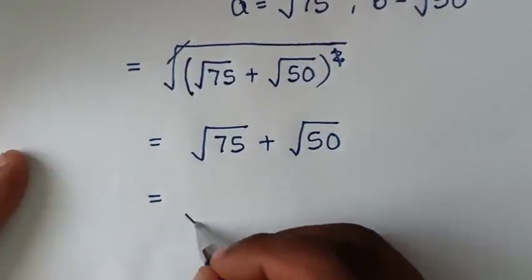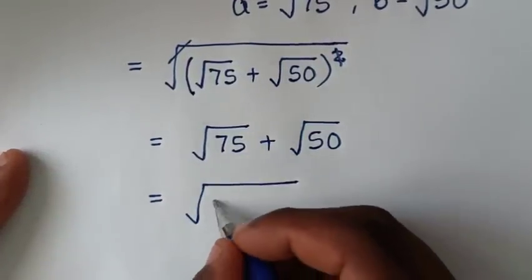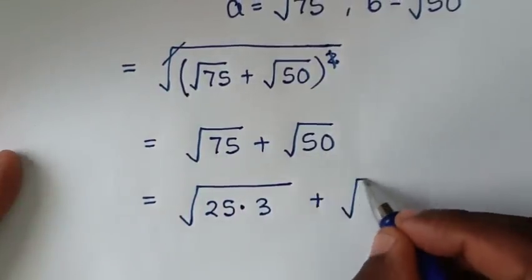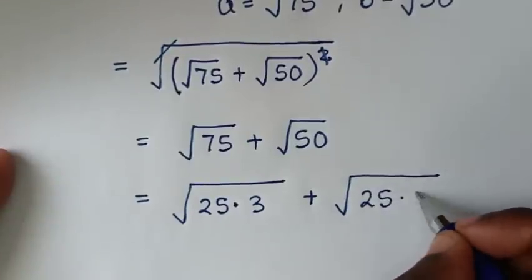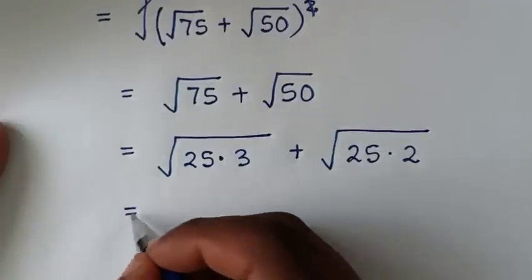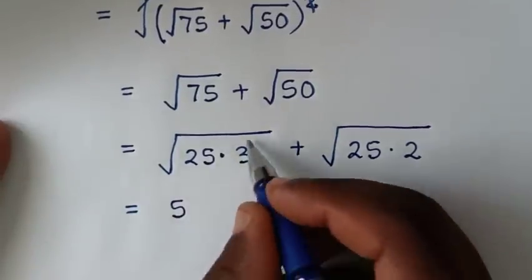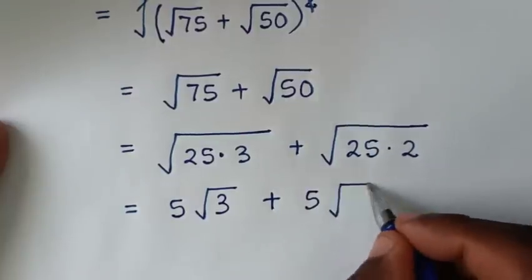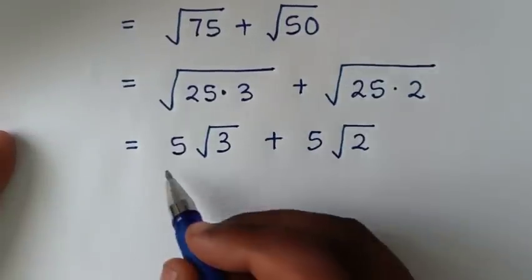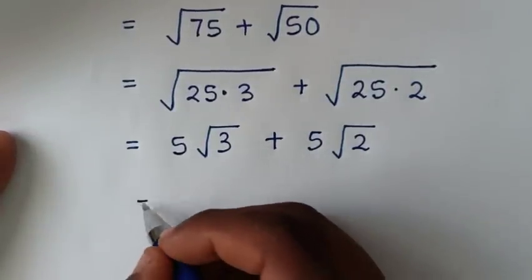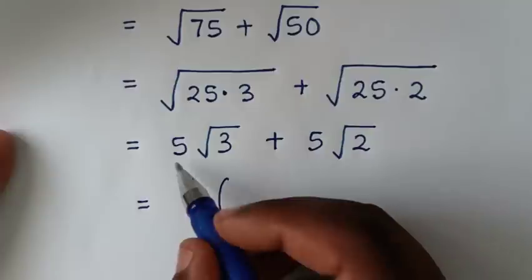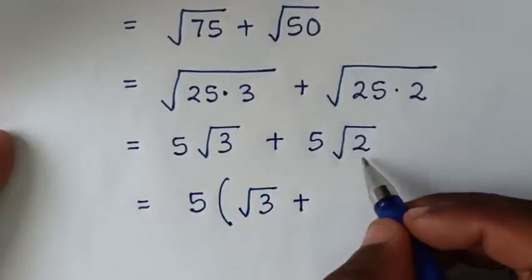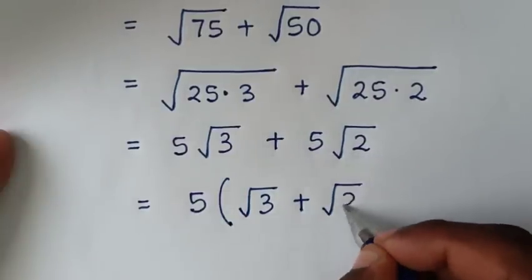Then, in the next step, it will be equal to square root of 75, which is 25 times 3, plus square root of 50, which is square root of 25 times 2. Then, it will be equal to square root of 25 — it is 5 — times square root of 3, plus square root of 25 — it is 5 — times square root of 2. Then, from here, 5 is common, so take 5 out of the bracket. So, it will be equal to 5 times bracket square root of 3 plus square root of 2 bracket. Therefore, the answer is 5(√3 + √2).